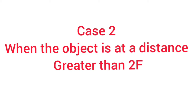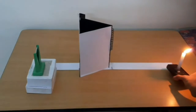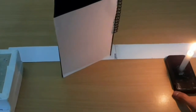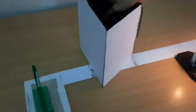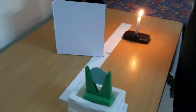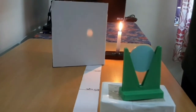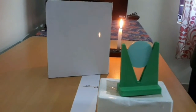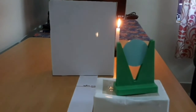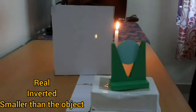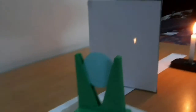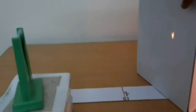In case 2, we will see the formation of image by the concave mirror when the object is at a distance greater than twice the focal length. Place the candle at a distance greater than 30 centimeters, that is greater than 2F. Adjust the screen until you get an image. In this case we will get a real, inverted, and diminished image. The image is smaller than the size of the object.